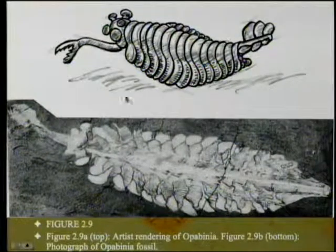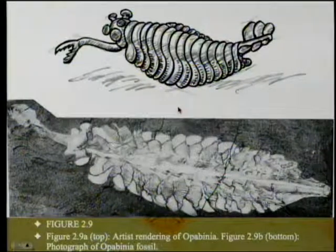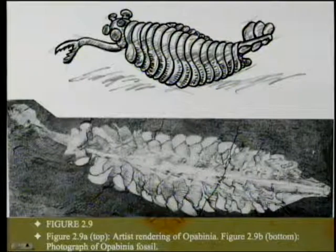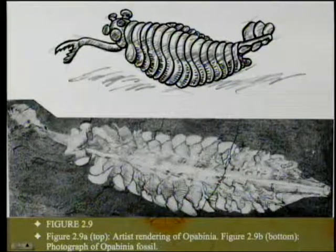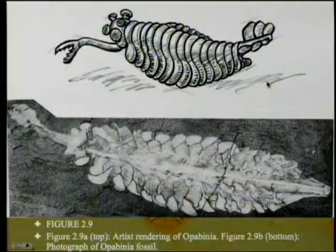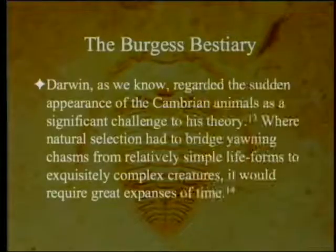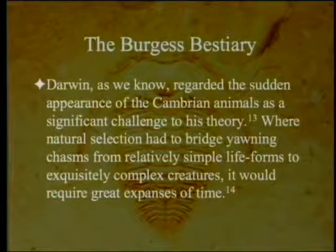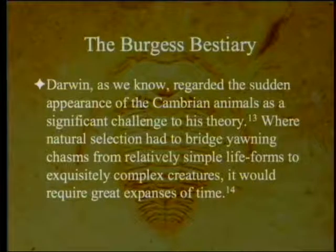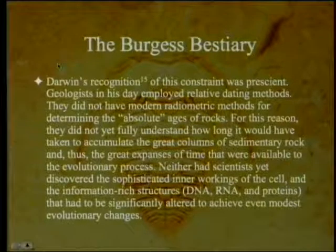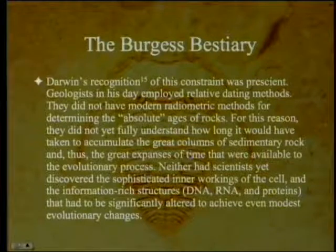Here's another one of those critters. You'll notice it has five eyes and a big proboscis with some kind of grabber on top. What does it belong to? It's obviously bilaterian, but it's hard to say what else. Darwin regarded the sudden appearance of Cambrian animals as a significant challenge to his theory. Where natural selection had to bridge yawning chasms from relatively simple life forms to exquisitely complex creatures, it would require great expanses of time. And Steve Meyer notes they didn't have radiometric methods or DNA to help them out.